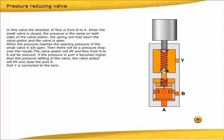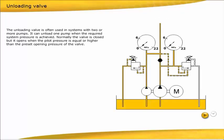Port Y is connected to the tank. The unloading valve is often used in systems with two or more pumps. It can unload one pump when the required system pressure is achieved.